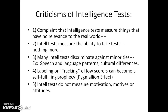A fourth problem is labeling or tracking of low scores, which can become a self-fulfilling prophecy. If somebody is labeled as having a low IQ, people won't expect as much from them, and they won't expect as much from themselves. This is also called the Pygmalion effect — if people don't think they're good at something, they're not going to try. Fifth, intelligence tests do not measure motivation, motives, or attitudes — things you really can't find from just taking a test.